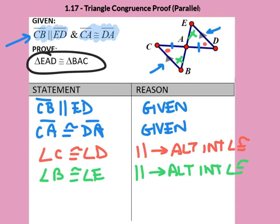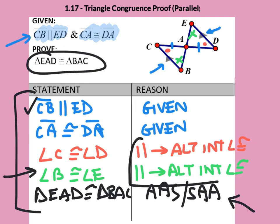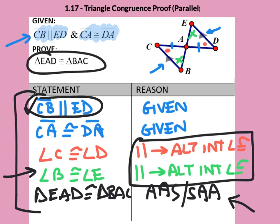The final step is to say triangle EAD is congruent to triangle BAC. Looking at why, I have angle, side, angle, angle, side, so it's by angle-angle-side or side-angle-angle. You could have listed the vertical angle, which would have changed the result to angle-side-angle. The parallel lines helped us obtain information about alternate interiors we couldn't have used without knowing the lines were parallel.